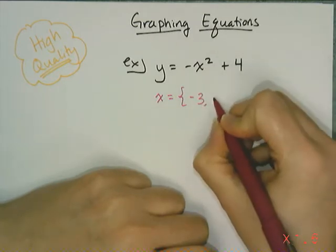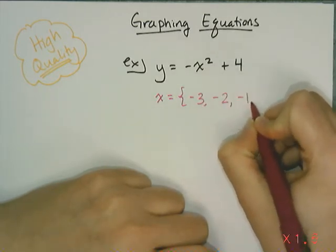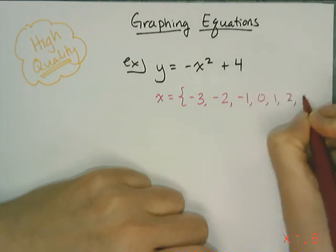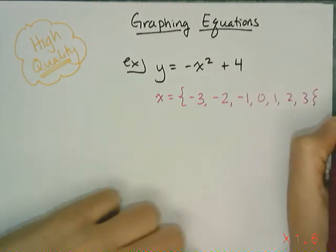Now, let's just go from negative 3 to negative 2 to negative 1 to 0 to 1 to 2 to 3. And that gives us 7 data points, which should be enough for this graph.